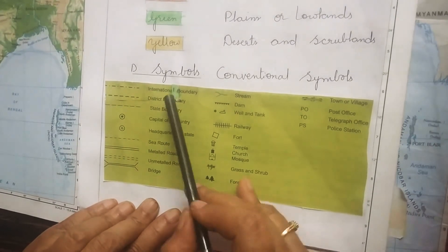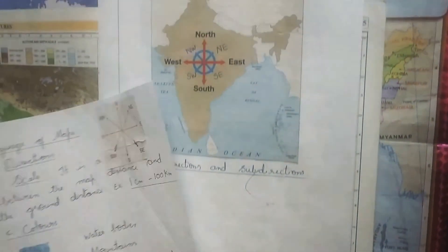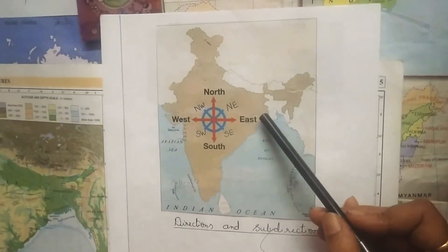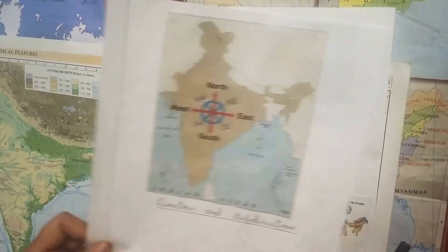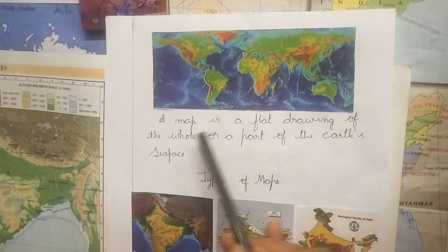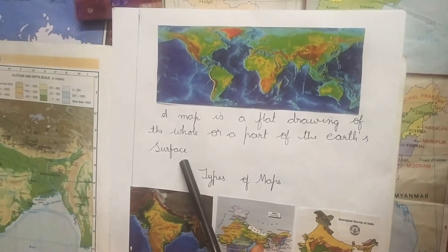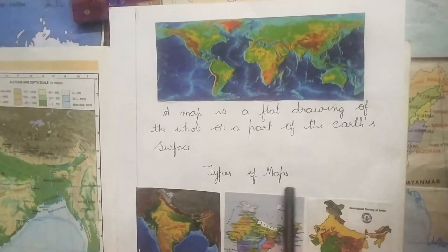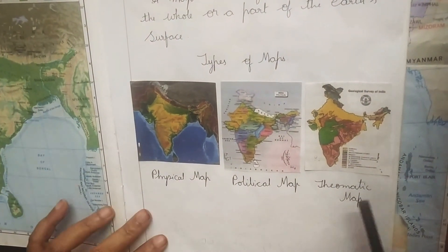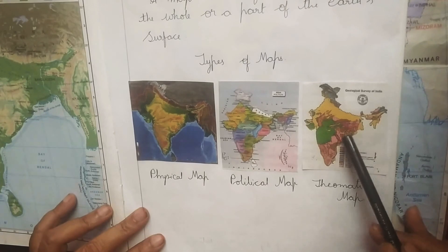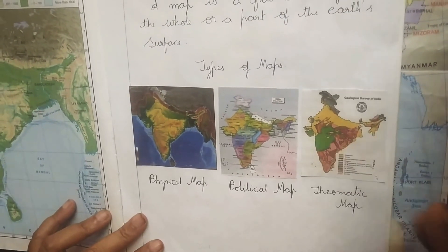So this is the language of the map — four languages in total. This picture clearly shows us the directions: north, south, east, west and sub-directions. This is an example of a map. A map is a flat drawing of the whole or a part of the earth's surface. Types of maps include physical map, political map, and thematic map — that means a map which shows you the type of soil, ownership and type of crops grown, etc.